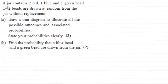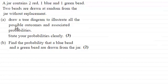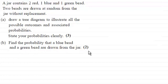Hi there. For this question we're given that a jar contains two red, one blue and one green bead, and two beads are drawn at random from the jar without replacement. In the first part we've got to draw a tree diagram to illustrate all the possible outcomes and associated probabilities, and state your probabilities clearly for three marks. Then we go on to find the probability that a blue bead and a green bead are drawn from the jar for two marks.